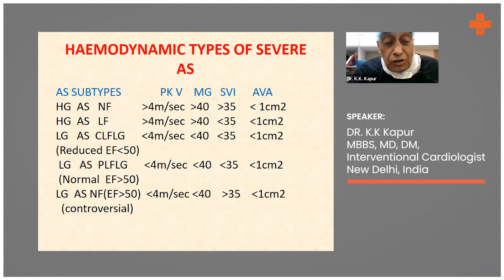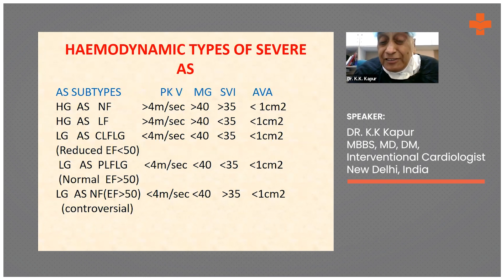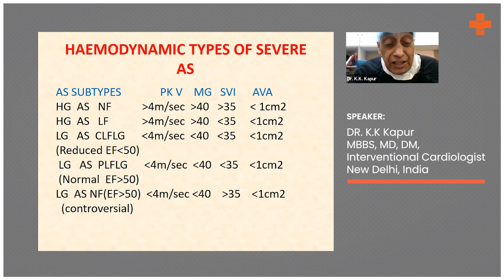Then we have what is called paradoxical low flow, low gradient — PLFLG — aortic stenosis, where again the peak velocity is less than 4 meters per second, the mean gradient is less than 40 millimeters of mercury, aortic valve area is again less than 1 centimeter squared, and the stroke volume index is less than 35 ml per meter squared, but the LVEF is normal. This is paradoxical because it is occurring with a normal LV and still we are getting a low flow.